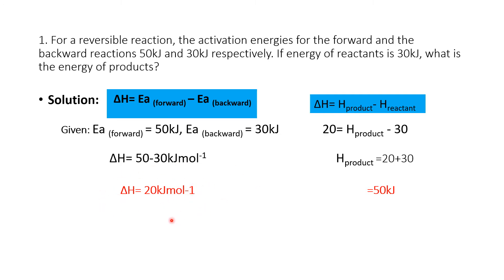They are asking: if the energy of the reactant is 30 kilojoules, what is the energy of the product? Delta H equals the enthalpy of the product minus the enthalpy of the reactant. Reactant is given as 30. So: 20 = energy of product − 30, which gives energy of product = 50 kilojoules.